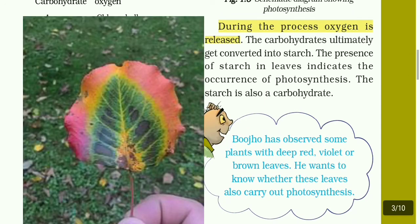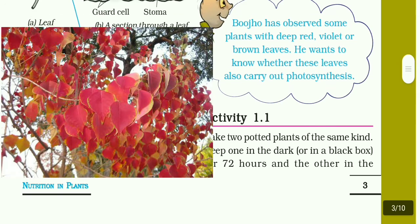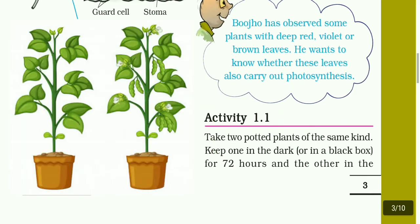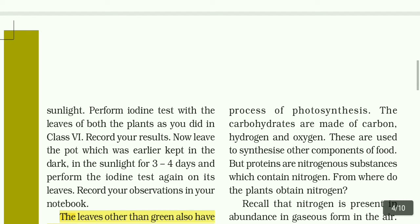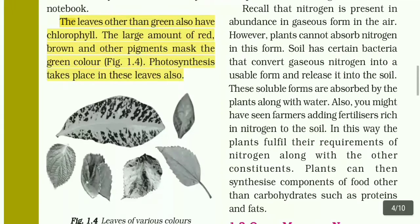Some plants have deep red, violet or brown leaves. Do these leaves also carry out photosynthesis? Activity 1.1: Take two potted plants of the same kind. Keep one in the dark for 72 hours and the other in sunlight. Perform an iodine test with the leaves of both plants as done in class 6, and record your results. The leaves other than green also have chlorophyll, but large amounts of red, brown and other pigments mask the green color. Photosynthesis takes place in these leaves too.